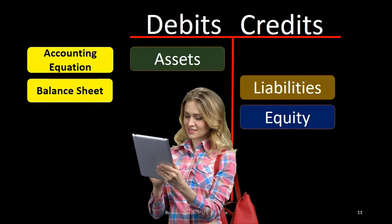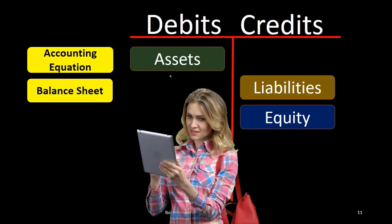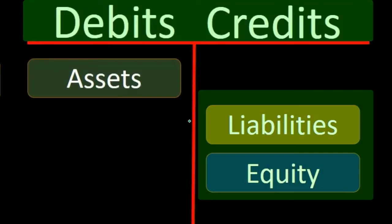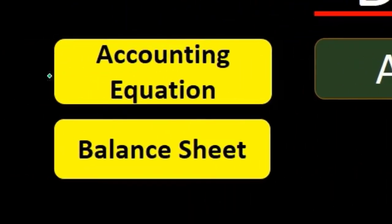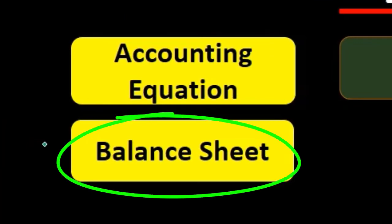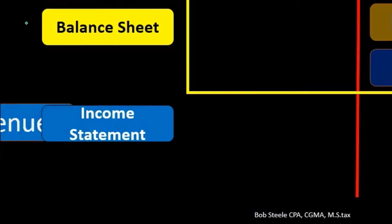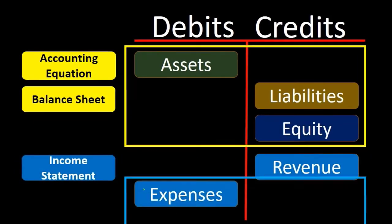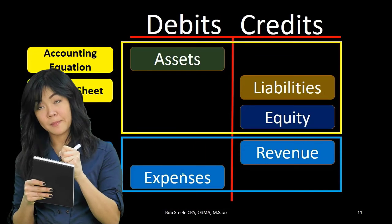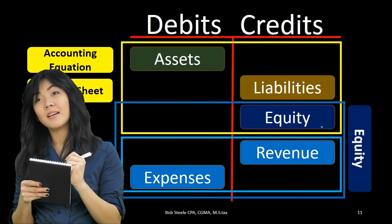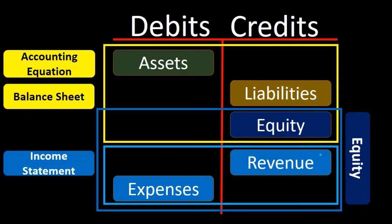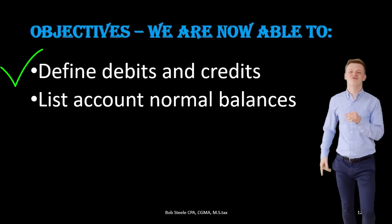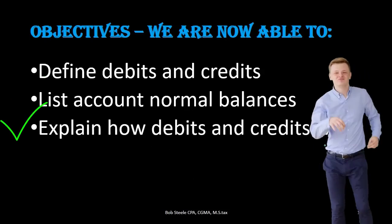One more review: have this cheat sheet available. Debits on the left, credits on the right. Assets are debit balance accounts, liabilities are credit balance accounts, equity is a credit balance account — that is the accounting equation and the balance sheet. Revenue is a credit balance account; expenses are a debit balance account — those are the income statement accounts; revenue minus expenses equals net income. The entire equity section is equity plus the temporary accounts of revenue and expenses. We are now able to define debits and credits, list account normal balances, and explain how debits and credits work.